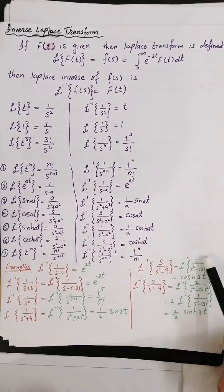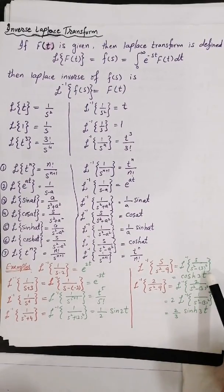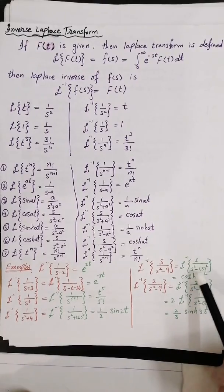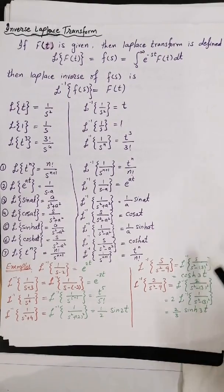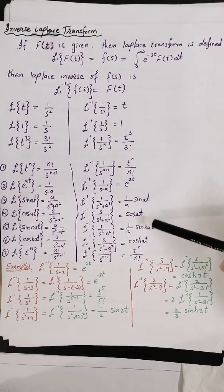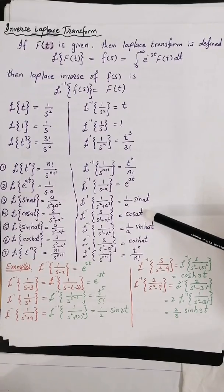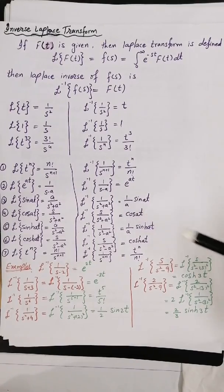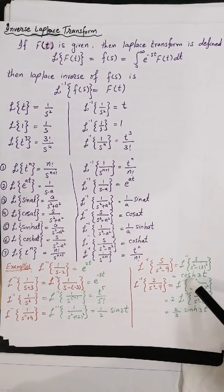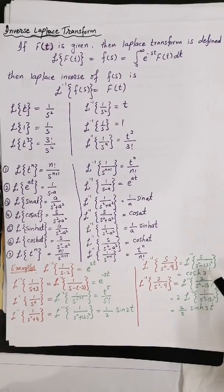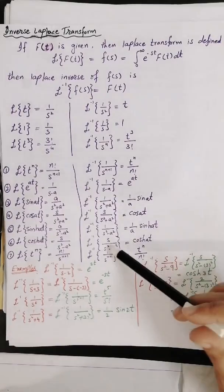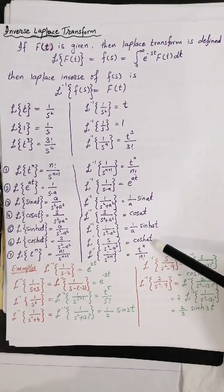Next, find the Laplace inverse of s over (s² minus 9). We write s² minus 9 as s² minus 3². This matches the formula s over (s² minus a²), which corresponds to the hyperbolic cosine formula. Therefore, Laplace inverse of s over (s² minus 9) equals cosh(3t).